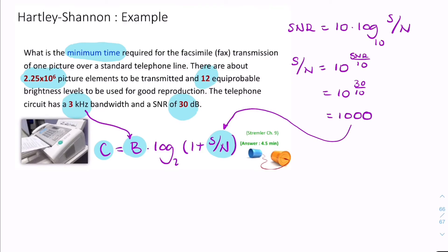So, the channel capacity is simply 3,000 times log to the base 2. It's very important that you use the base 2 rather than the base 10 into 1,000 and 1. And putting that in your calculator, that gives you 29,901.7. And the units is bits per second.